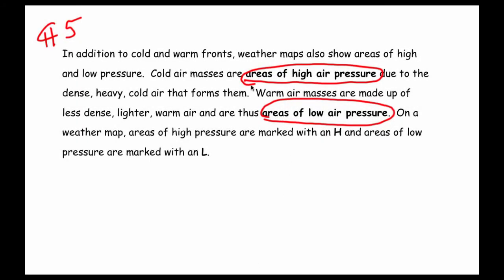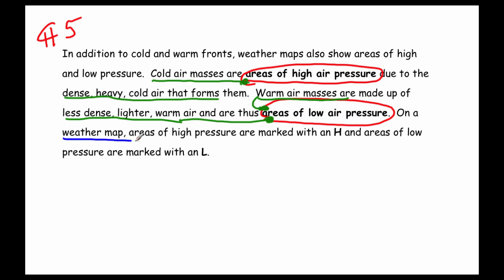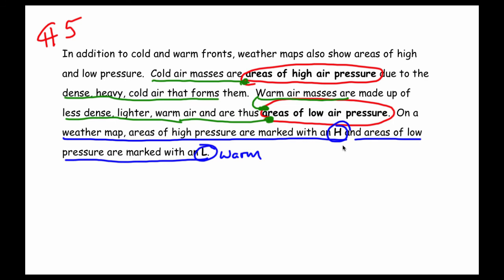With your green colored pencil in hand: cold air masses are areas of high pressure — they have dense, heavy, cold air. Warm air masses are areas of low pressure, made up of less dense, lighter warm air. On a weather map, areas of high pressure are marked with an H and areas of low pressure are marked with an L. So areas of warm air are marked with an L generally, and areas of cooler or cold air are going to be marked with an H. Make sure you have your paragraph marked and we'll move on to the last paragraph.